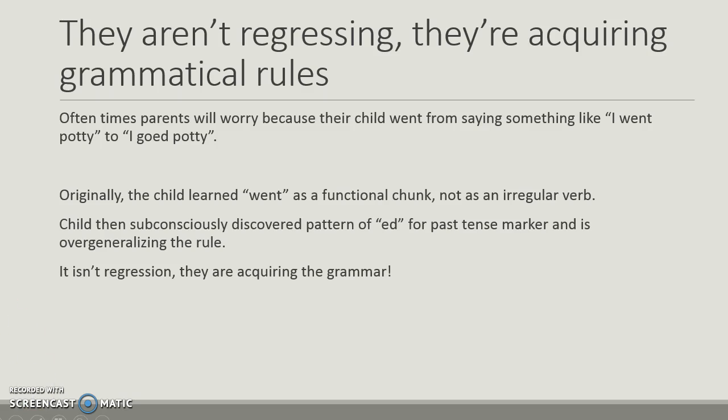Oftentimes, parents become concerned and say their child is regressing in language development, but it's not true. They're acquiring grammatical rules. For example, a child might go from saying 'I went potty' to 'I goed potty.' The child originally learned 'went' as a functional chunk, not as an irregular verb. Then they subconsciously discovered the pattern of '-ed' as the past tense marker and are now overgeneralizing the rules. The child isn't regressing — they're acquiring grammar, and they will figure out irregulars as they continue and receive feedback.